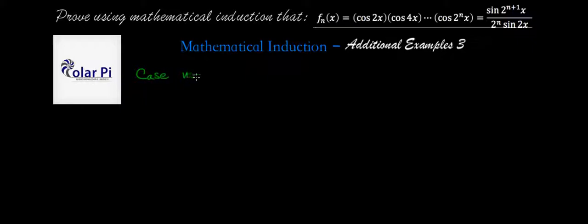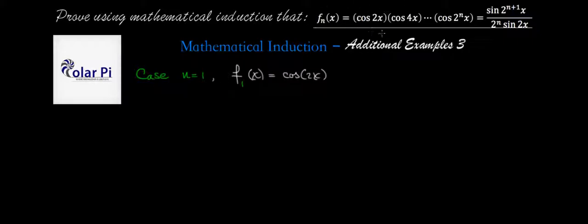So the first case, case one, is where we let n equal one. Here we'd have to show that f sub one — and yes, f comes with the subscript n — so when n is equal to one, we'll have to write f sub one of x. According to the left-hand side, that is equal to cosine of two x. And if on the left-hand side we look at this general term, when n is equal to one, we'd have cosine of two to the first, which is two times x, so cosine two x.